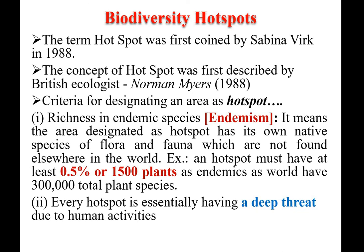The first criteria is richness in endemic species. Endemism means the area designated as a hotspot has its own native species of flora and fauna which are not found elsewhere in the world. A hotspot must have at least 0.5 percent or 1,500 plants as endemics, given that the world has 3 lakh total plant species. Every hotspot is also essentially under deep threat due to human activities, that is, anthropogenic factors.